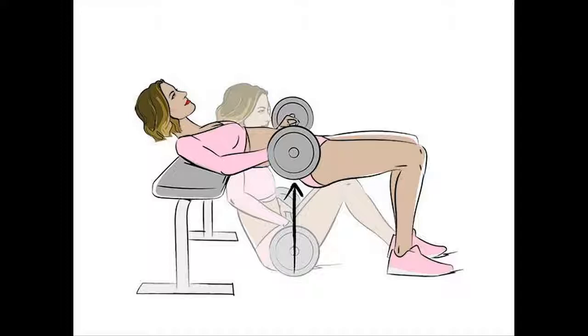Sitting upright on a bench, start with dumbbells held straight above your head. Slowly bend your elbows and lower dumbbells until they are in line with your shoulders.